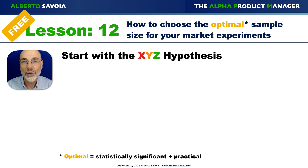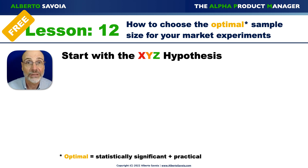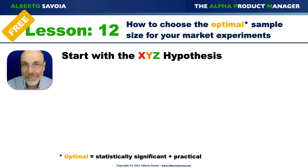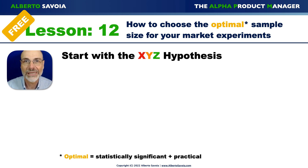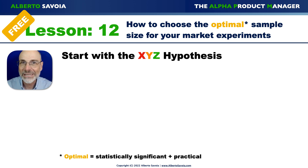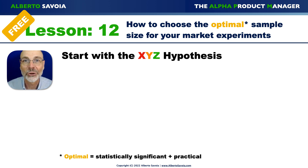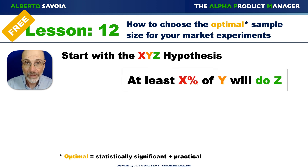So how do we find the optimal sample size? As always, start with the XYZ hypothesis — that's what I teach. If you're not familiar with the XYZ hypothesis, go watch my videos on it, because it's the most important thing you can do. It's a business case, a business plan, a business model in a single assertion.